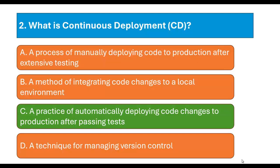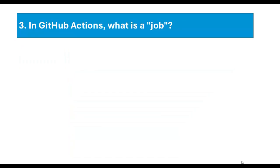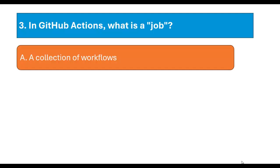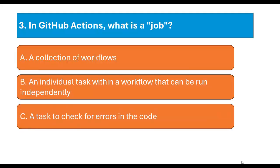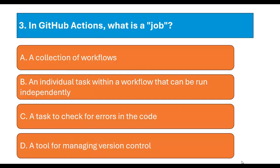Question number 3: In GitHub Actions, what is a job? Option A: A collection of workflows. Option B: An individual task within a workflow that can be run independently. Option C: A task to check for errors in the code. Option D: A tool for managing version control. Please pause the video and try to answer. The correct answer is Option B: An individual task within a workflow that can be run independently.